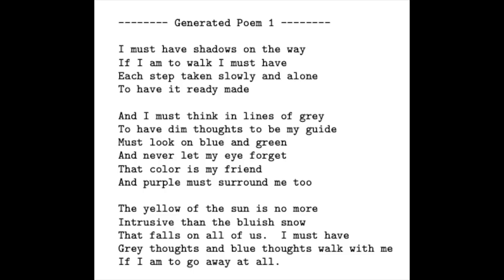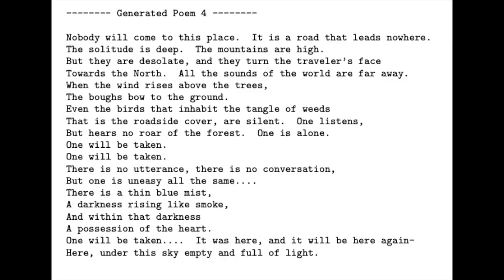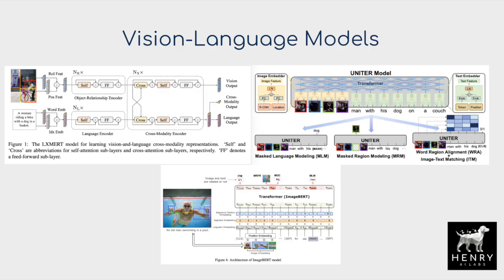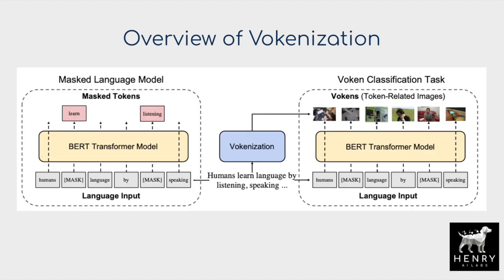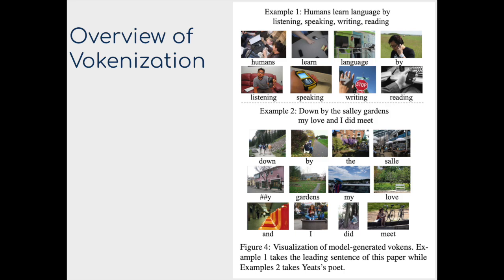Advances in deep learning usually come from processing data in a single domain. The StyleGAN model that produces photorealistic facial images is trained only on image data. Similarly, GPT-3, which can generate articles, is trained only on text data. There's an increasing interest in the AI community to bridge these domains and have vision-language representation learning leverage information from images to learn representations for language and vice versa.